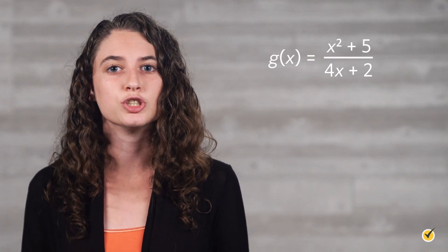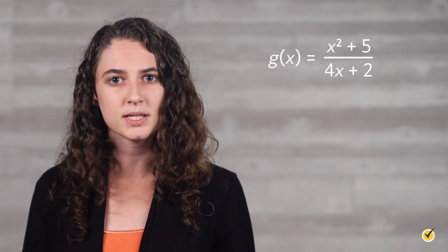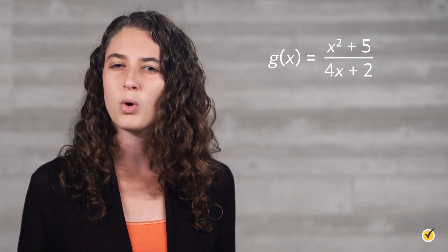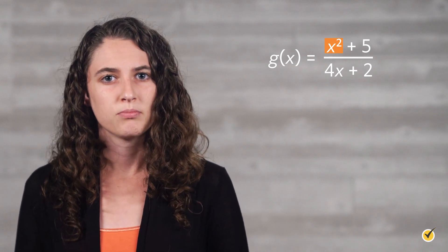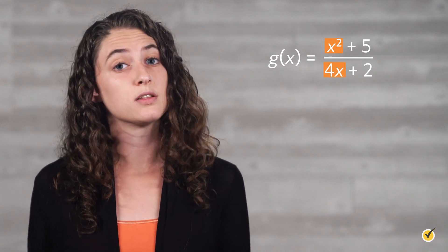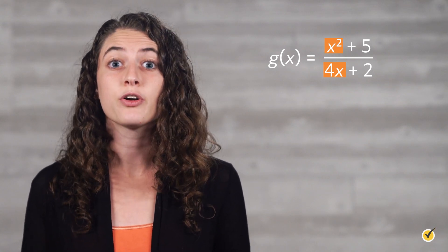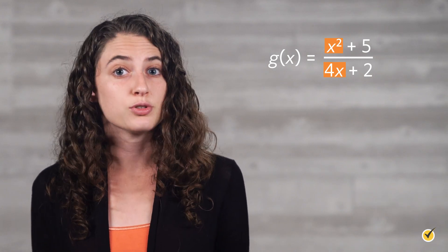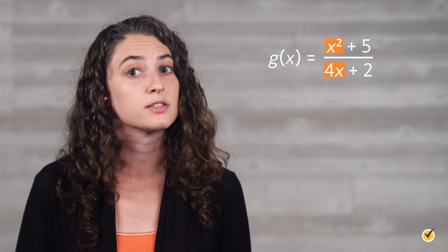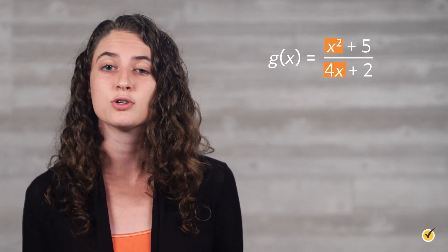Let's try another problem. Find any horizontal asymptotes of the function g of x is equal to x squared plus 5 over 4x plus 2. What is the term with the highest power in the numerator? x squared. And what is the term with the highest power in the denominator? 4x, or 4x to the first power. Remember, for determining if horizontal asymptotes are present, we are first concerned with the exponents of these terms. Since 2 is greater than 1, the numerator has a higher power term than the denominator, which tells us that there are no horizontal asymptotes for this function.